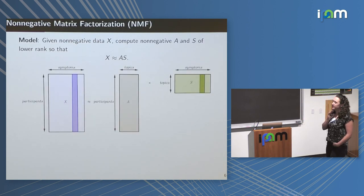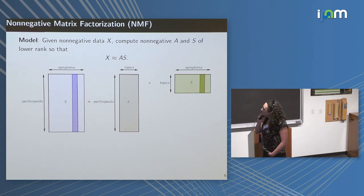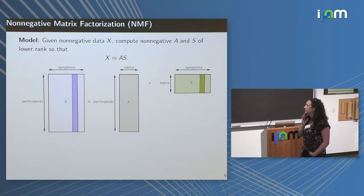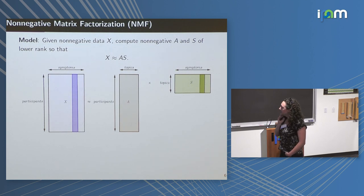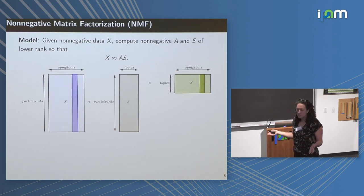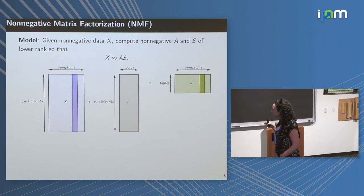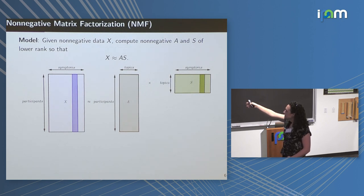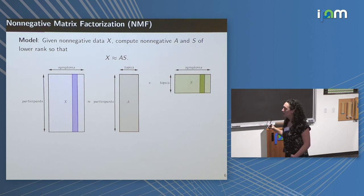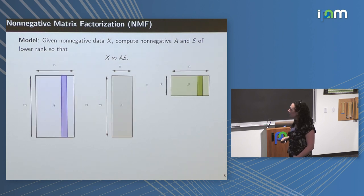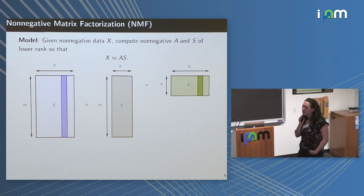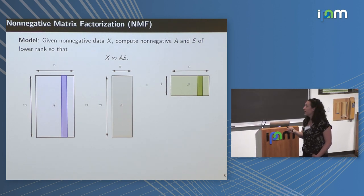Here I'm illustrating NMF applied in our specific application dataset. We have a symptoms-by-participants data matrix X, which is non-negative. NMF asks us to compute two factor matrices A and S. The columns of A are going to be topics or archetypal objects composing the objects in X. The highlighted column in S gives the additive coefficients which, when multiplied onto the columns of A and summed, approximately form the highlighted object in X. We choose a number of topics K as a user-defined parameter that can represent a priori information about the dataset.